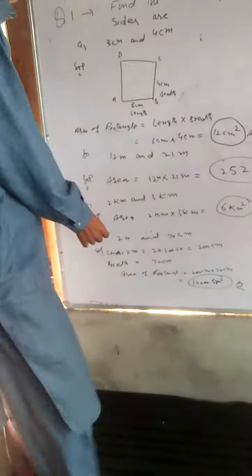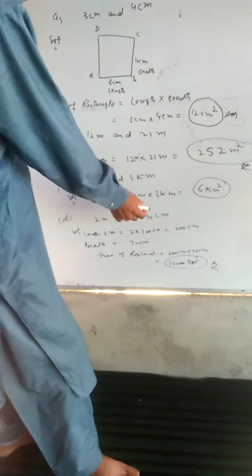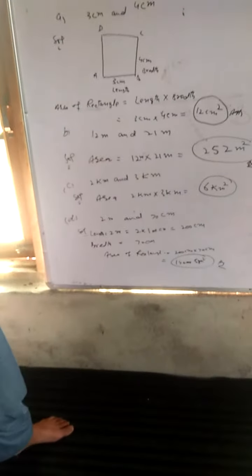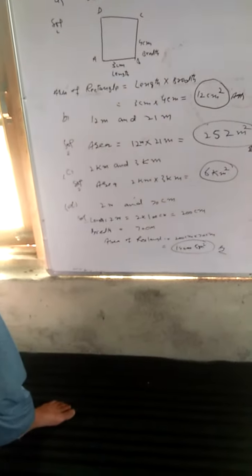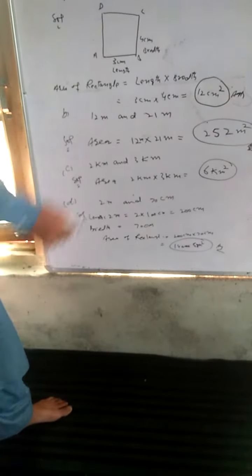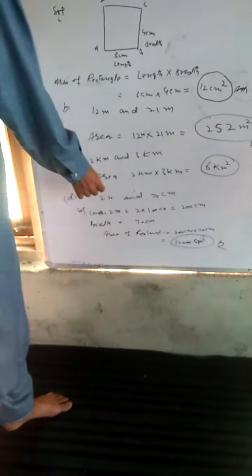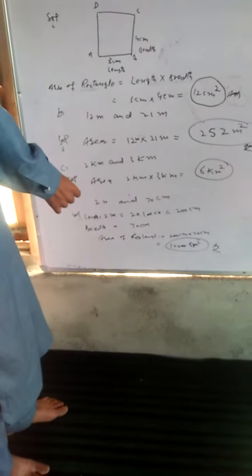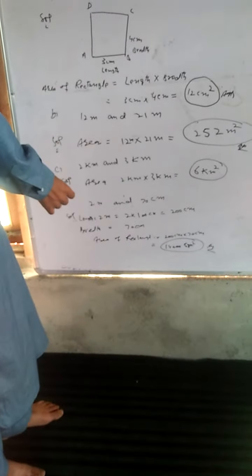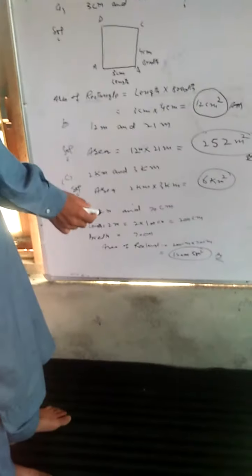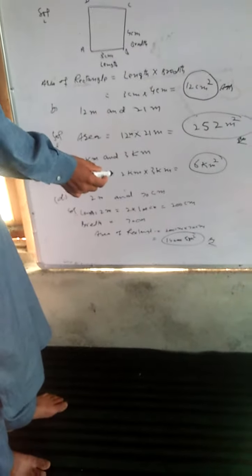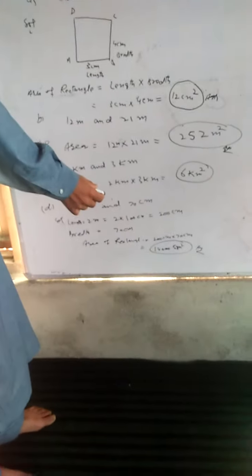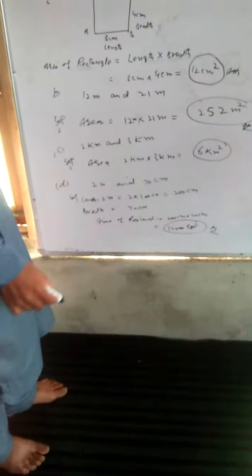For case D, the dimensions are 2m and 70cm. Converting: 2m = 200cm. So the area = 200cm × 70cm = 14000cm².